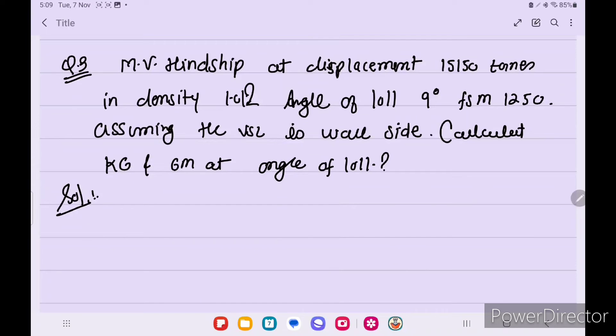Next. MV Handship at displacement 15150 tonnes in density 1.012, angle of loll 9 degree. FSM 1250. Assuming the vessel is well sided, calculate KG and GM at angle of loll.